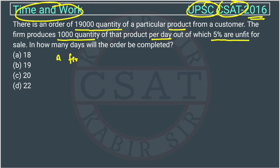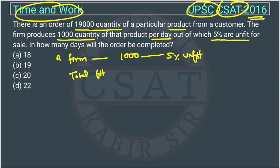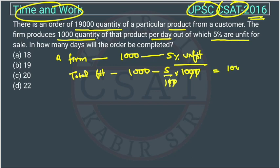The firm is producing 1,000 goods per day, and out of this 1,000, 5 percent are unfit. So total fit products per day: we take 1,000 and subtract the unfit. Unfit is 5 percent of 1,000, which equals 50. So it will be 1,000 minus 50, giving us 950 units fit for sale per day.